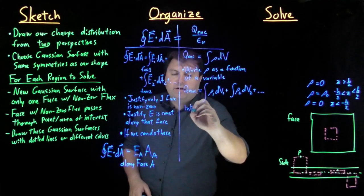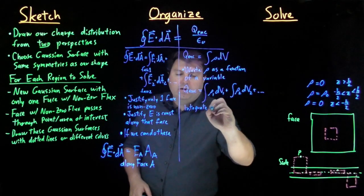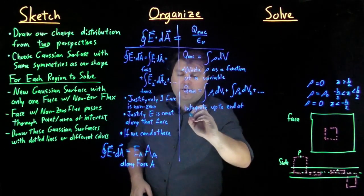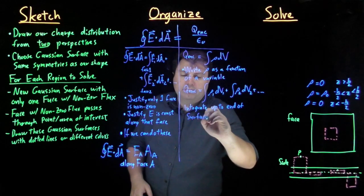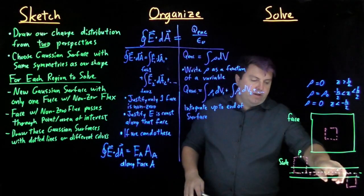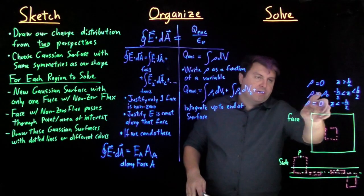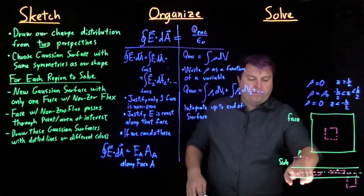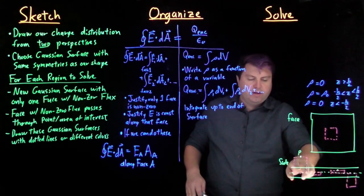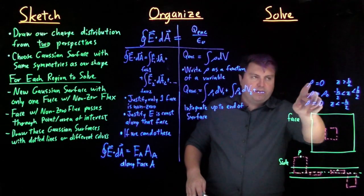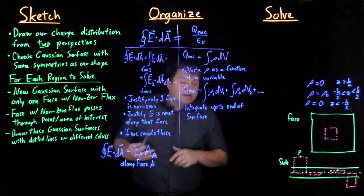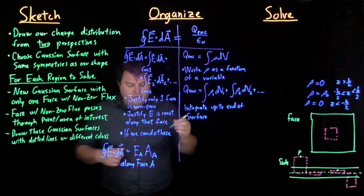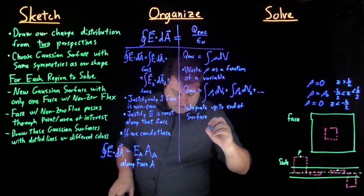And so then if we have this, then our charge enclosed is equal to the integral of rho 1 dV1 plus rho 2 dV2, and then we integrate up to the end of the surface. So if I am doing here, I only have to worry about this charge density area. But if I'm doing here, I have to integrate from my start to the end of this charge density, and then up in this area through this charge density. It's trivial for this case because this charge density is 0, but a very good, useful thing to do.